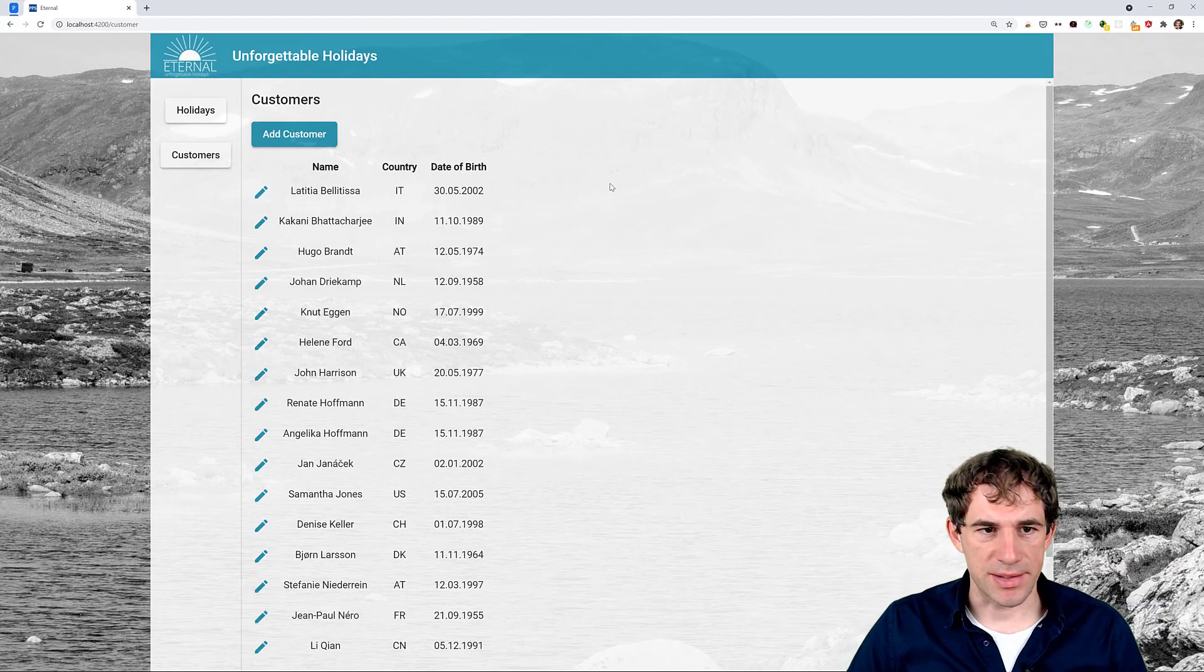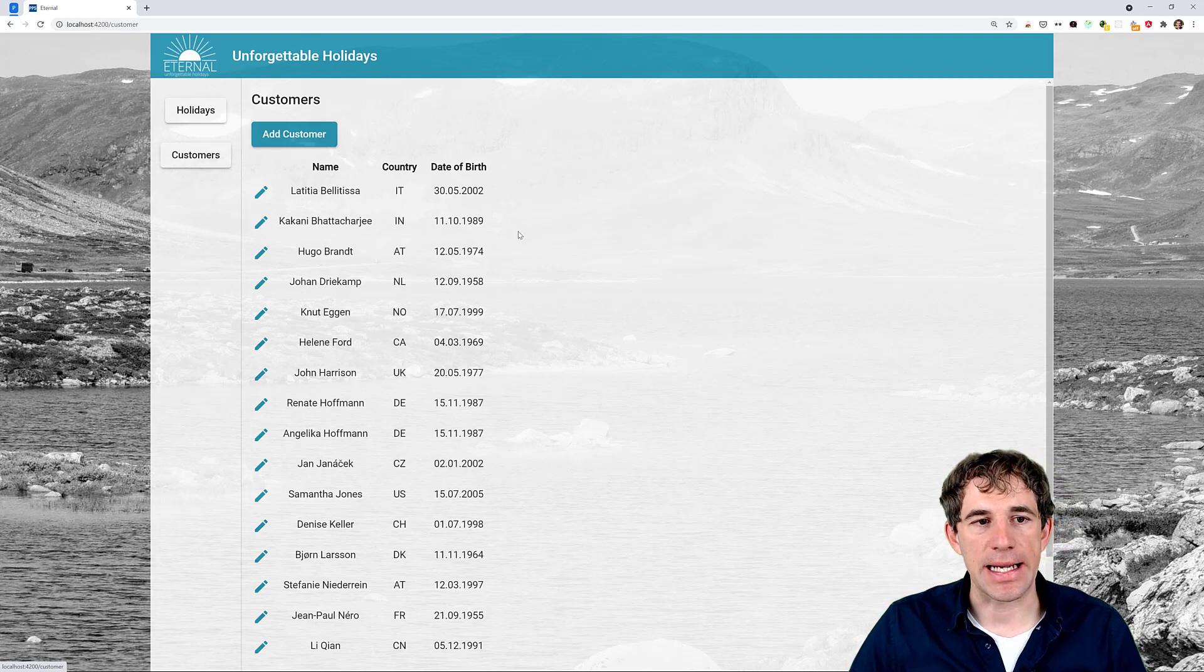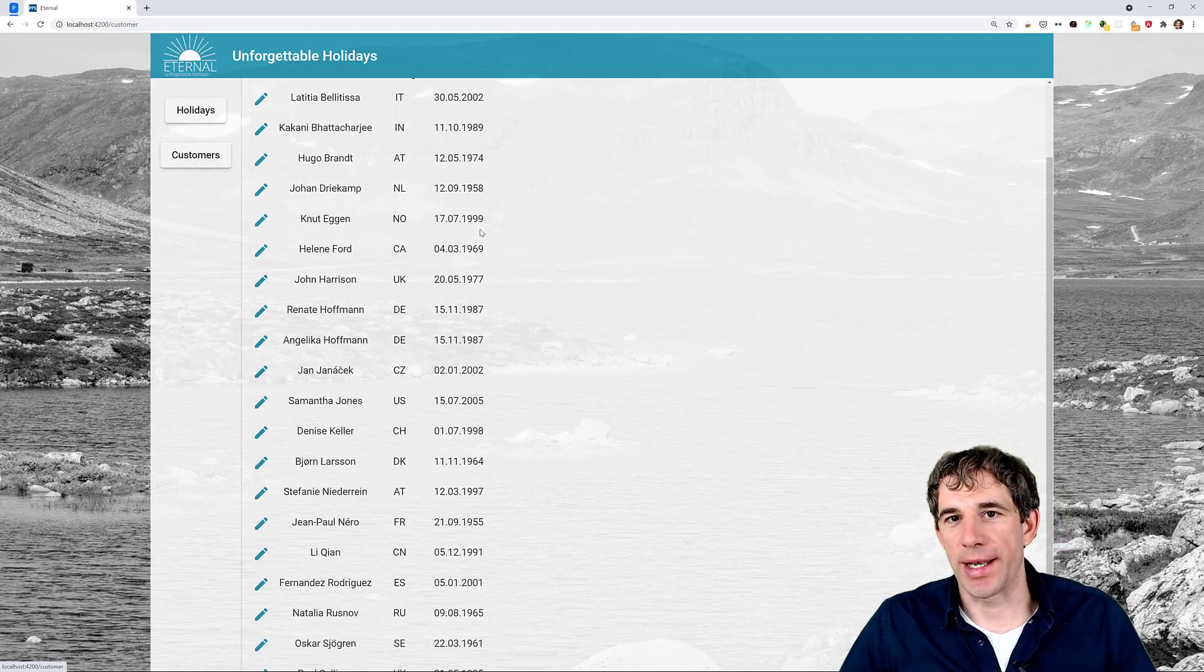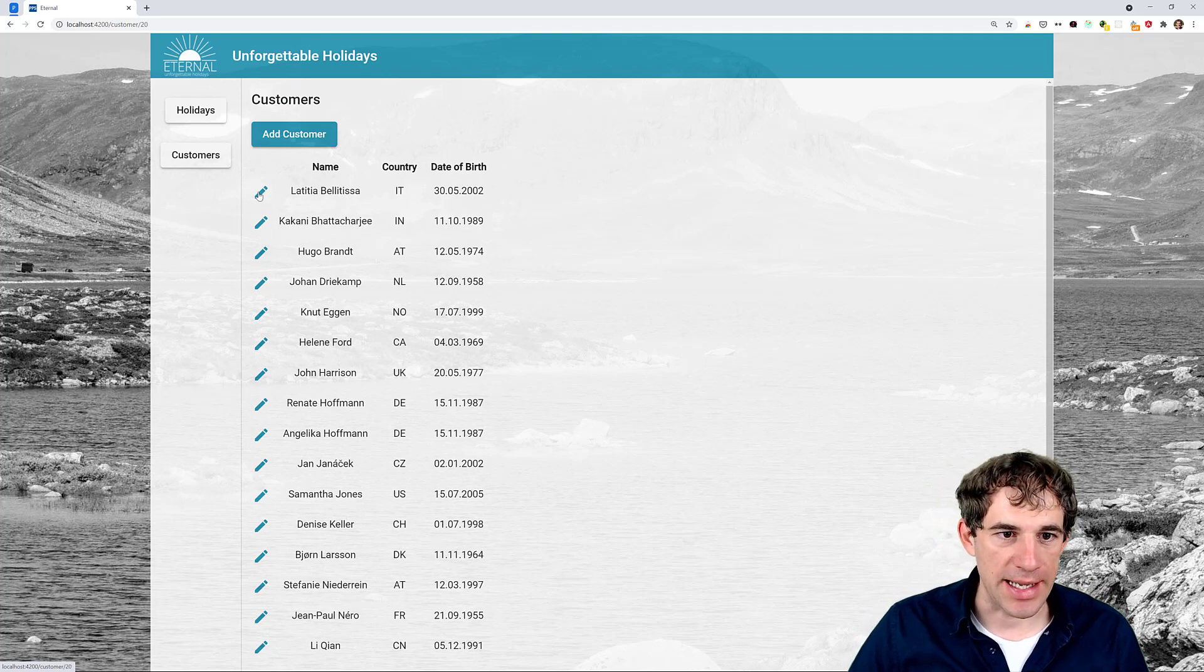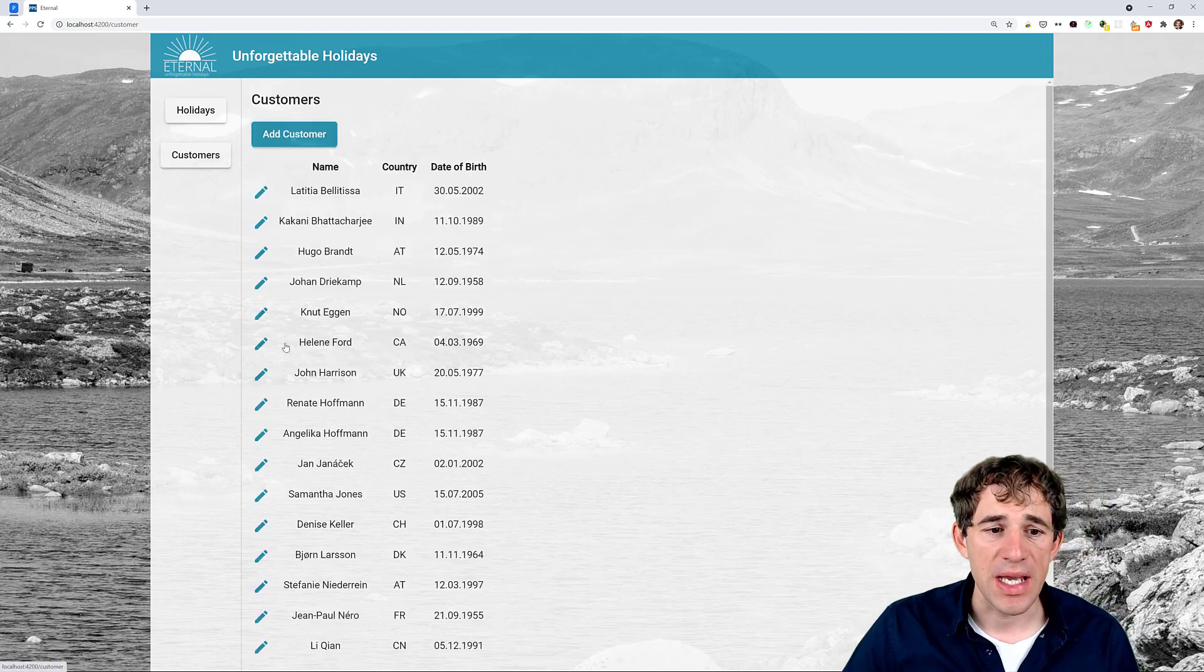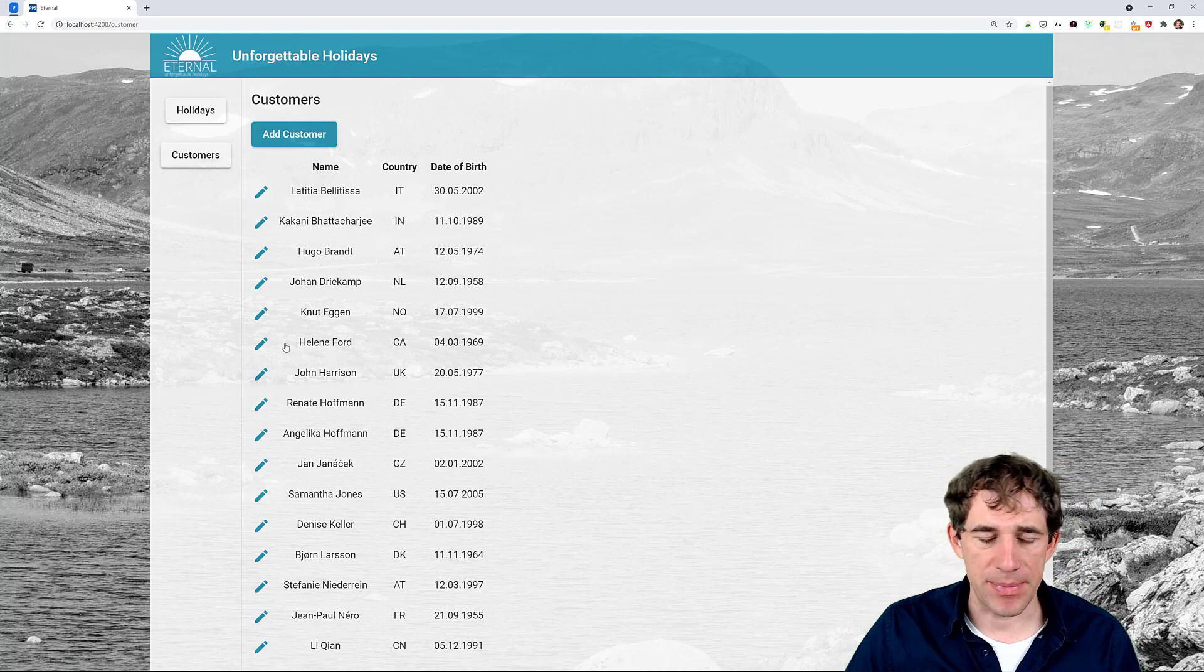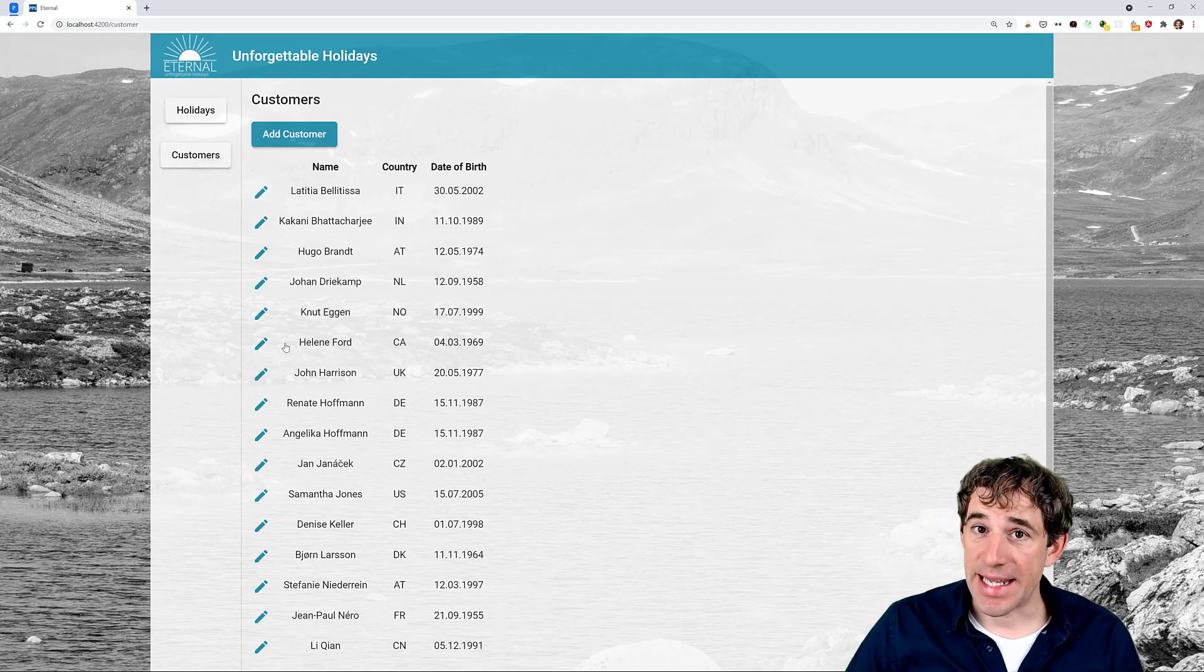All right. So this is our demo application. We see here that this is an imaginary travel agency. And what we find here is a customers list, which is just showing a list of customers. And of course, what we can also do is that we can edit a customer, we can save it, delete it, go back and of course also add a new customer. So a very simple application actually, but enough for us to have something to work with. Now let's take a look at the code.